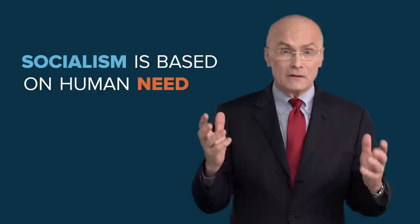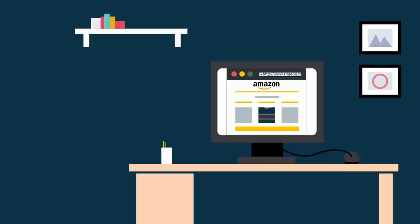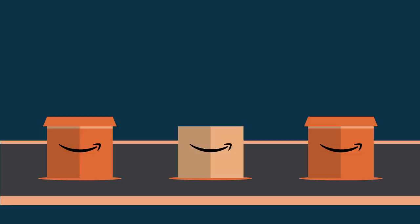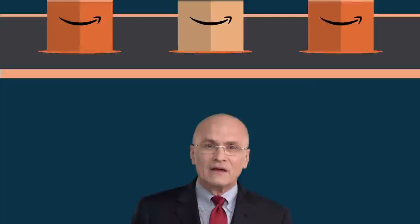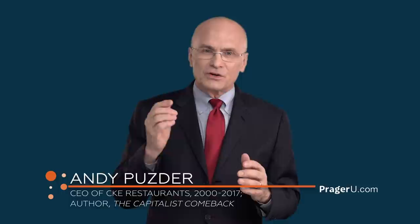Capitalism versus socialism. We can sum up each economic system in one line. Capitalism is based on human greed. Socialism is based on human need. Right? No. Wrong. So wrong. It's exactly backwards. And I'll prove it to you. Been on Amazon lately? Each of the thousands of products Amazon offers represents the work of people who believe they have something you want or need. If they're right, they prosper. If they're wrong, they don't. That's how the free market works. It encourages people to improve their lives by satisfying the needs of others. No one starts a business making a thing or providing a service for themselves. They start a business to make things or provide services for others.